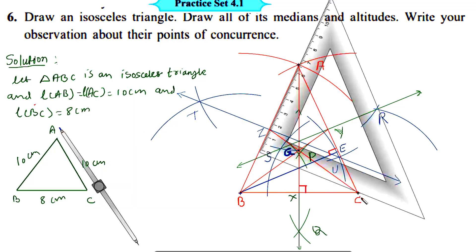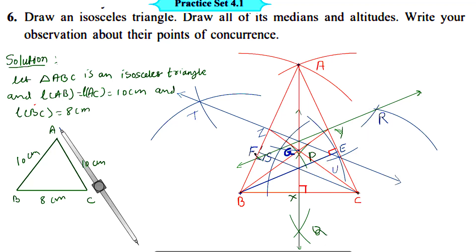To draw the altitude from vertex C to opposite side AB, put the set square along side AB and the other side on vertex C. Draw a perpendicular from vertex C to opposite side AB. Therefore, segment CF is the altitude of triangle ABC. All three altitudes of the triangle intersect at one point, denoted by the letter O. This is the orthocenter of triangle ABC. All three altitudes of a triangle are concurrent, and this point of concurrence is called the orthocenter, denoted by the letter O.